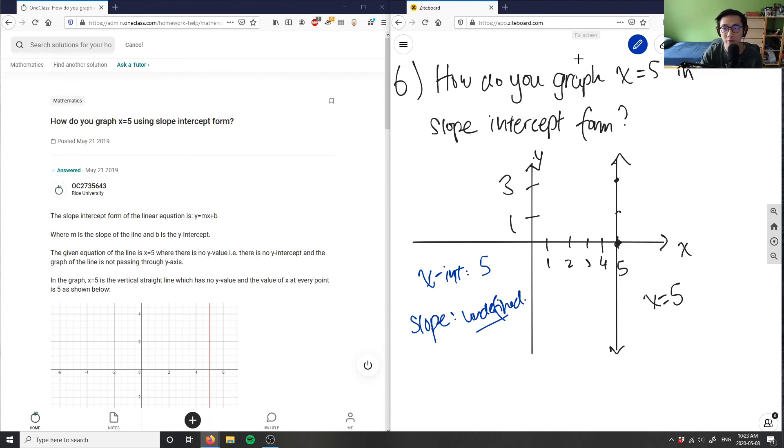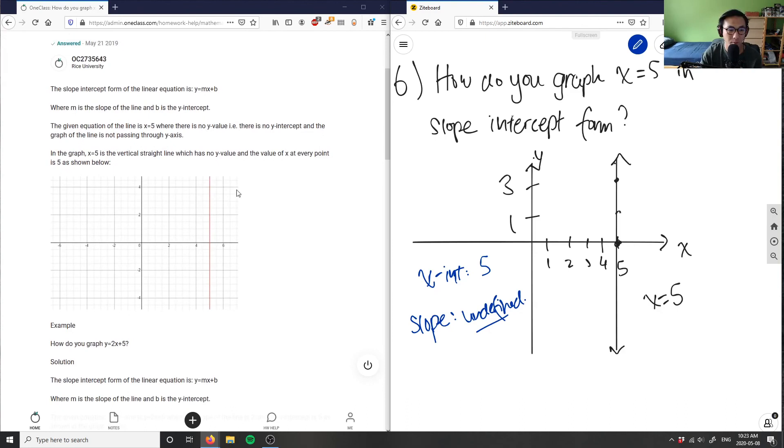So that's all for x equals five in slope-intercept form. Again, they use Desmos, which is actually perfect. I would use Desmos as well to show this as well. But x equals five is indeed a vertical line with no y values, and every value of x at every point here is five here. So the solution here is correct.